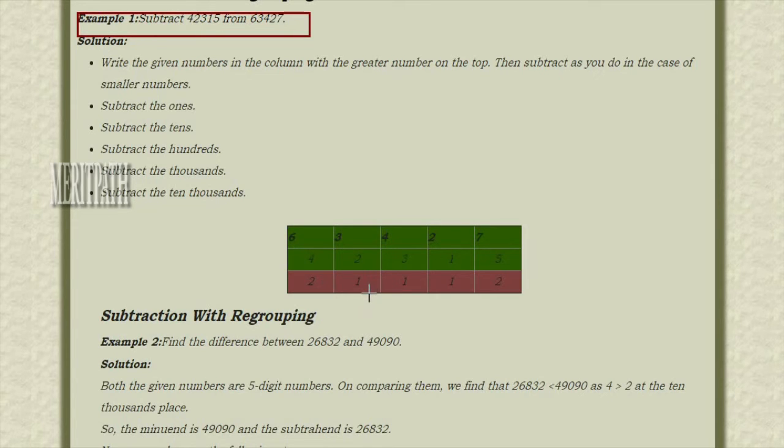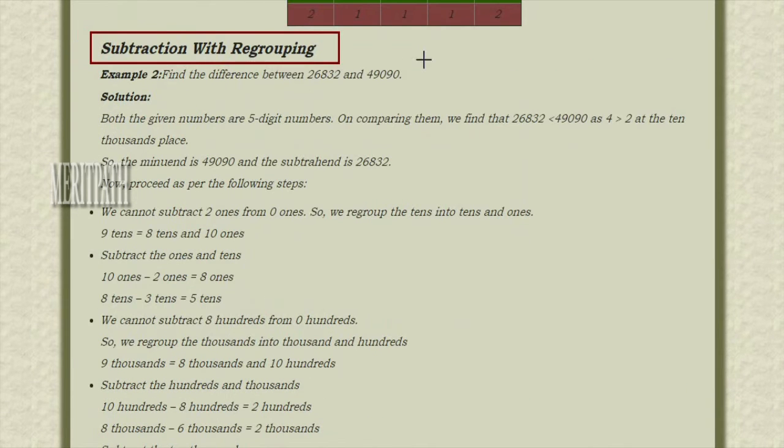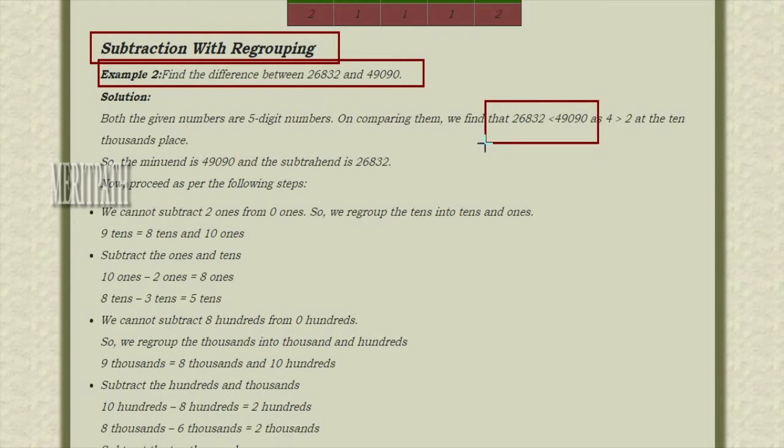Let us do subtraction of numbers with regrouping. Find the difference between 26,832 and 49,090. We can observe here 49,090 is greater than 26,832.